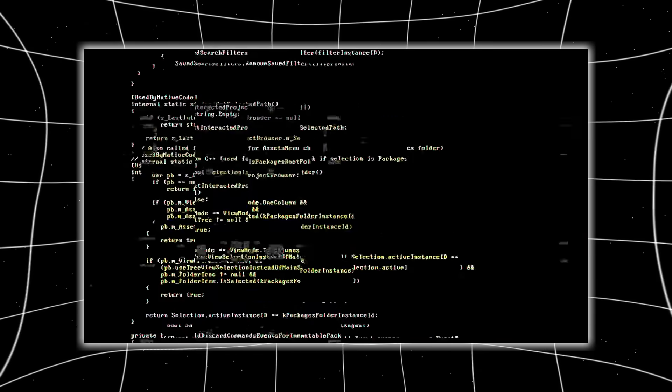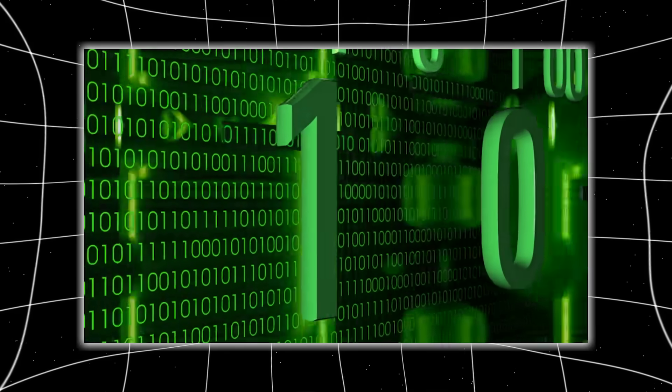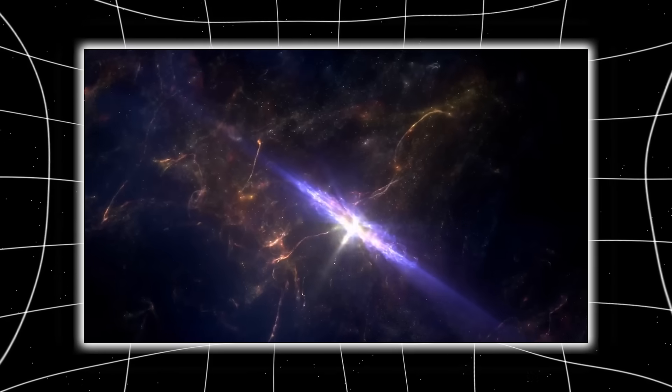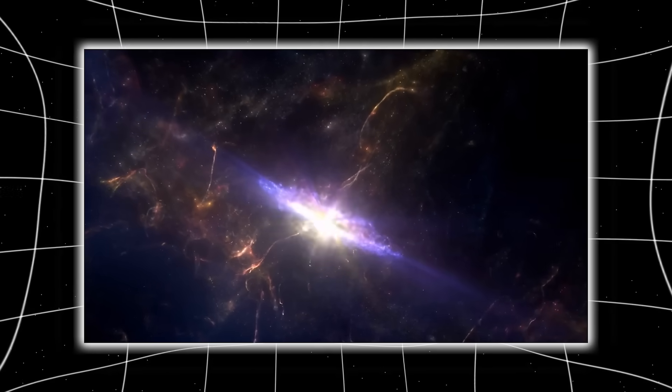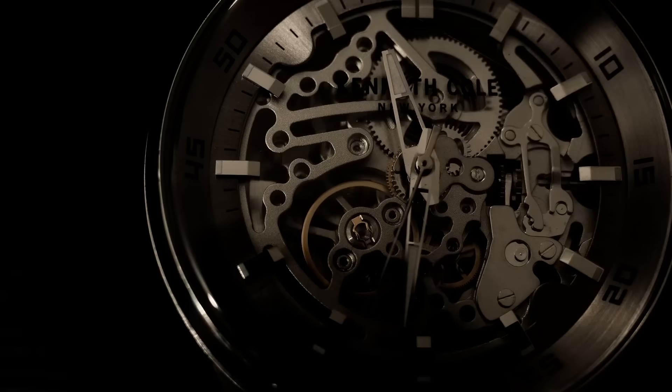When decrypted, the data wasn't telemetry or images. It was binary. A structured transmission embedded inside the network itself, synchronized with 3I Atlas's pulse sequence. And when decoded, it formed coordinates, but not for space, for time.